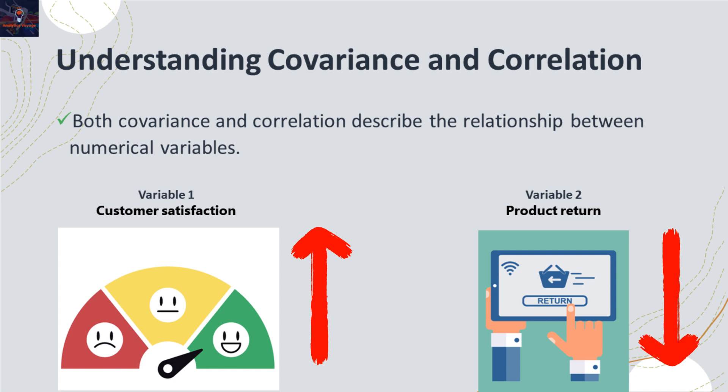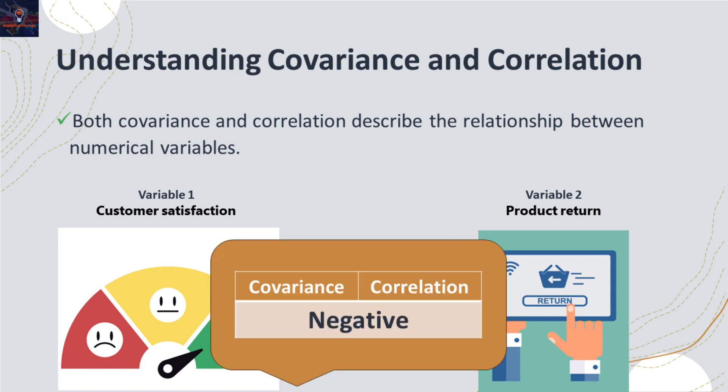It is evident that when customers are happy and satisfied with their purchase, they are less likely to return the product. The fact that these two variables move in the opposite direction suggests negative covariance or negative correlation.